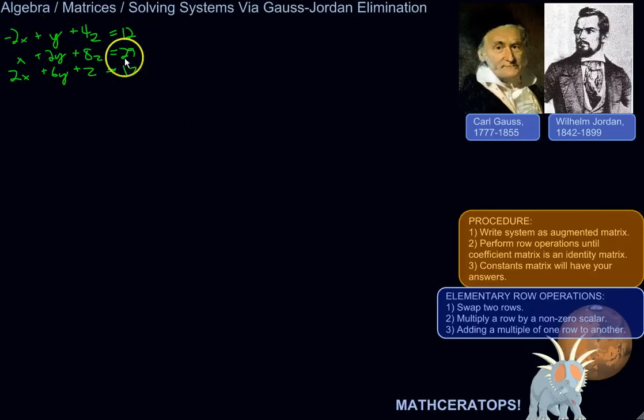So we're going to solve this system of linear equations with a matrix, and we're going to use the Gauss-Jordan elimination method, sort of a little variation on the Gaussian elimination method, which involves a couple of extra steps.